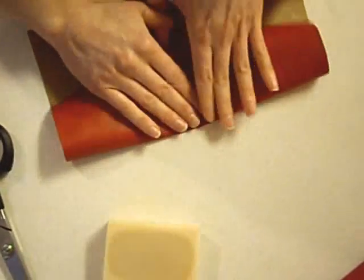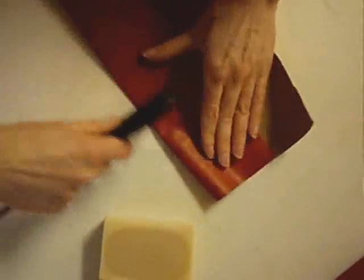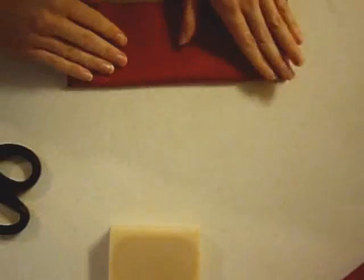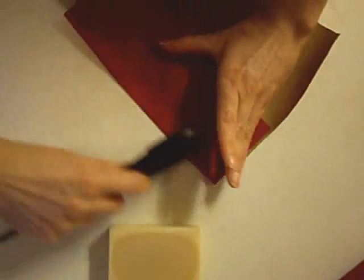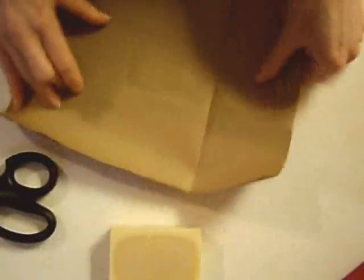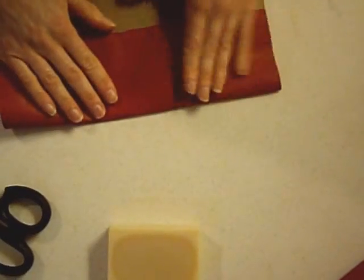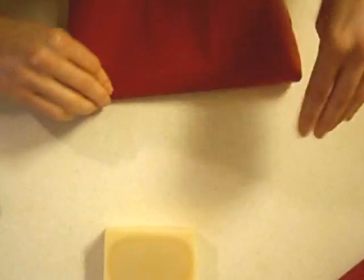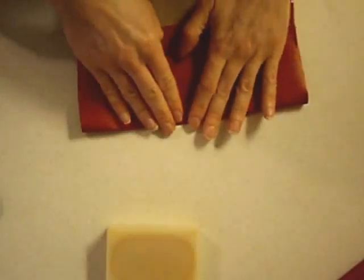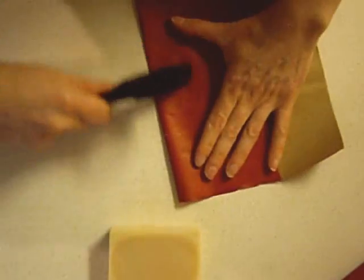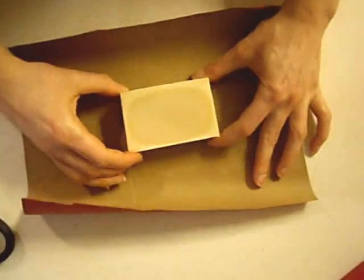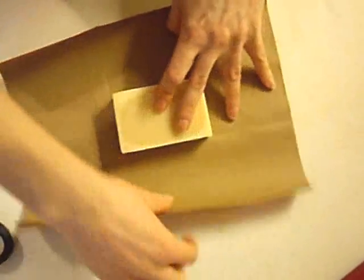Now take your soap off and go ahead and fold down all of those lines. I like to use the handle of my scissors because it folds it down really fast and it works as a creasing tool. So when all of your sides are folded down, you'll notice that the rectangle left is the exact size of your soap. So that's perfect.